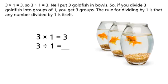3×1 equals 3, so 3÷1 equals 3. Neil put three goldfish in bowls.